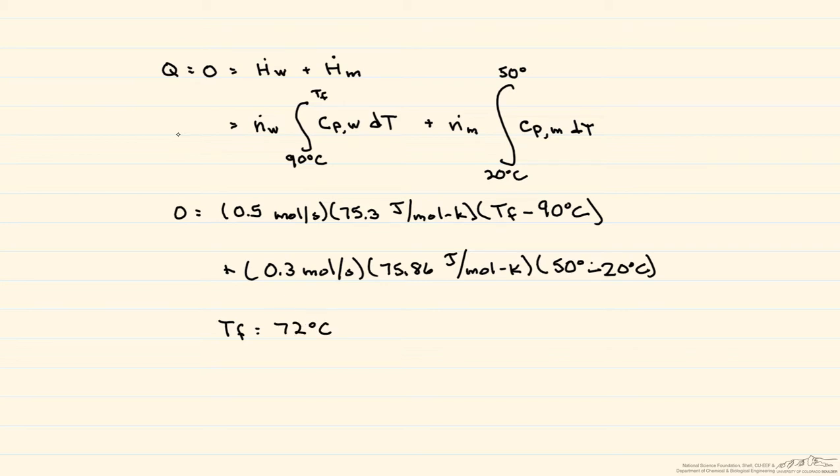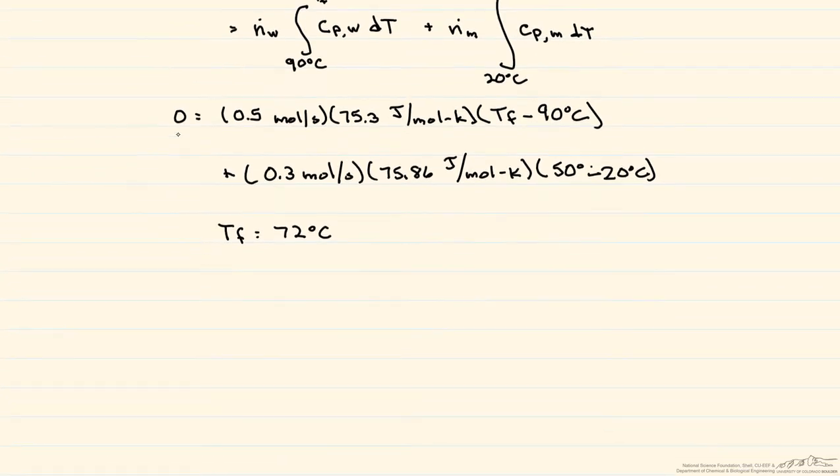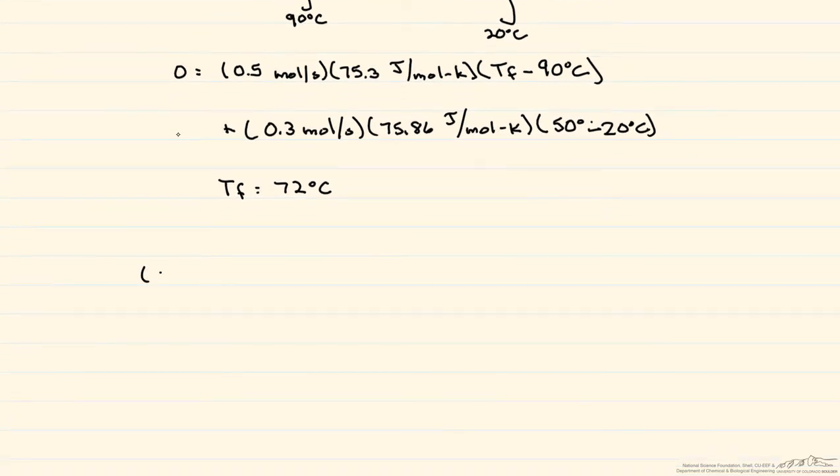Now, an easier way perhaps for you to see it is that the enthalpy of one is equal to the negative enthalpy of the other. So we can rewrite this as 0.5 moles per second, again this is the water, times 75.3 joules per mole Kelvin, and that's the heat capacity, times, and now we're switching this, 90 degrees C minus T final.